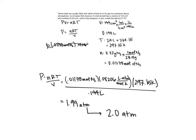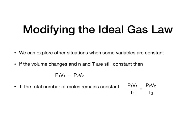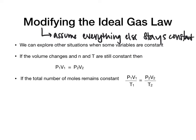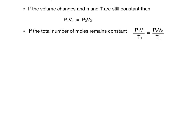What happens when we don't want to just do this calculation over and over again? We can modify the ideal gas law. If PV equals a constant, assuming everything else stays constant, we can look at P1V1 equals P2V2, given that PV equals NRT.